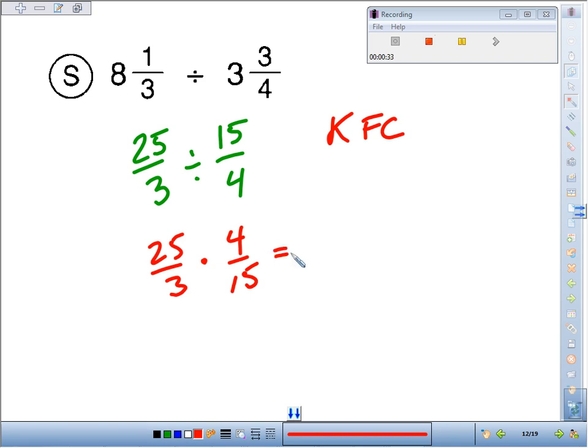What do we end up with? 25 times 4 is 100. 3 times 15 is 45. 45 goes into 100 twice. That makes 90. From 90 to 100 is a remainder of 10 45ths.